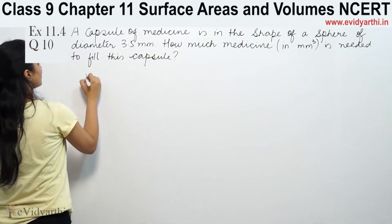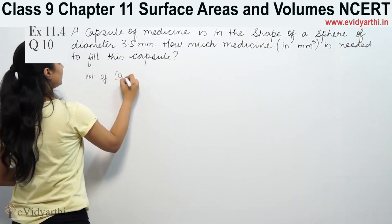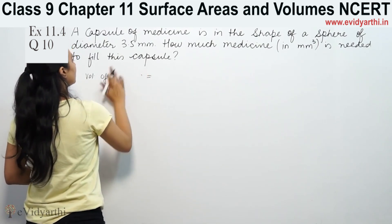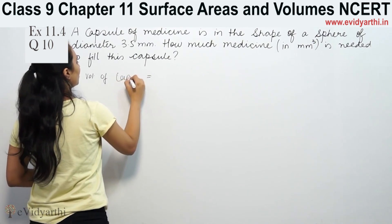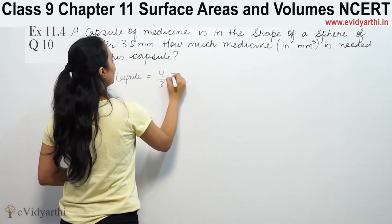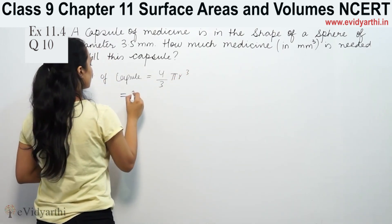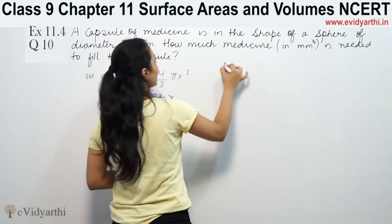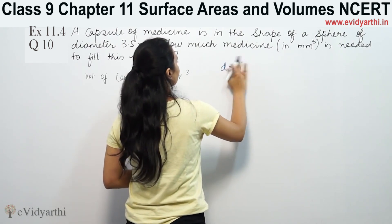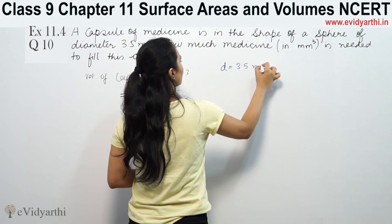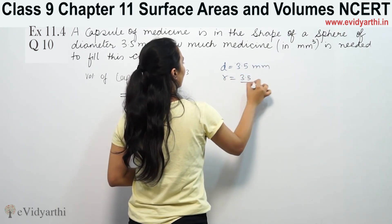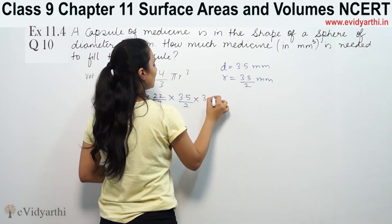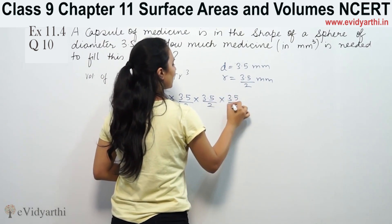The diameter given is 3.5 mm. Volume of medicine equals volume of capsule, which is 4/3 π r³. So this is 4/3 × 22/7 × r³. Now diameter given is 3.5 mm, so radius will be equal to 3.5 by 2 mm. So radius is 3.5/2 × 3.5/2 × 3.5/2.